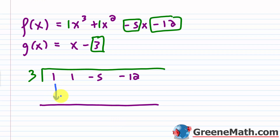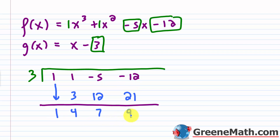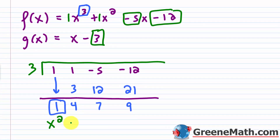When I do the synthetic division, the remainder is going to be 9, because that's what we found when we plugged 3 in for x. Drop the 1 down, then multiply and add: 3 times 1 is 3, 1 plus 3 is 4; 3 times 4 is 12, negative 5 plus 12 is 7; 3 times 7 is 21, negative 12 plus 21 is 9. This leftmost position is the coefficient for x raised to one degree less than the dividend, so the answer is x squared plus 4x plus 7, with remainder 9 over x minus 3.